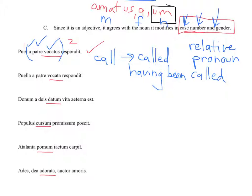The second sentence says: the girl responded, having been called — vocata — by father — a patre. Vocata here is feminine because it agrees with puella. Puella is nominative, singular, and feminine. And so vocata, the adjective — the participle perfect passive in this case — is also in the nominative, singular, feminine. In the first sentence, vocatus was in the nominative, singular, masculine.